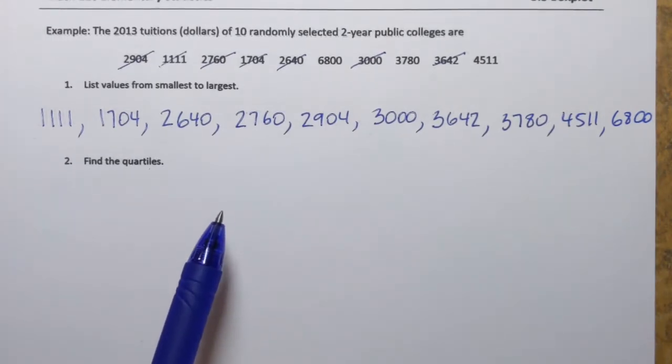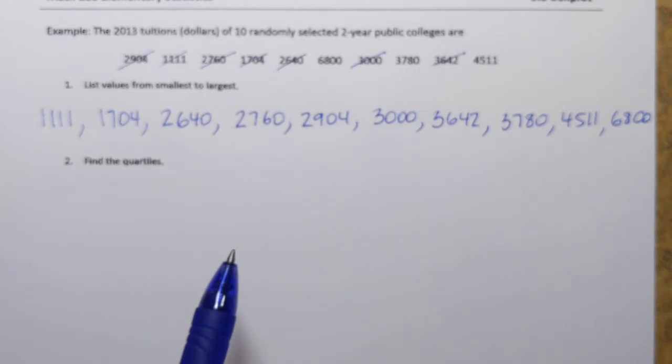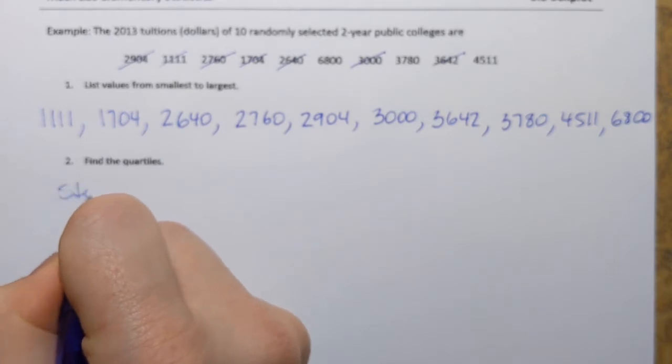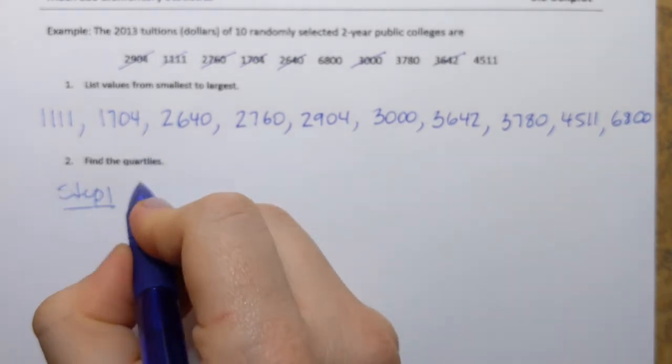Next we'll need to find quartiles. Remember when we're constructing a boxplot, we use values that we call Q1, Q2, and Q3 quartiles. We're going to now find them all, but in a special order. So we're always going to start, and we'll write it as step one, with Q2.